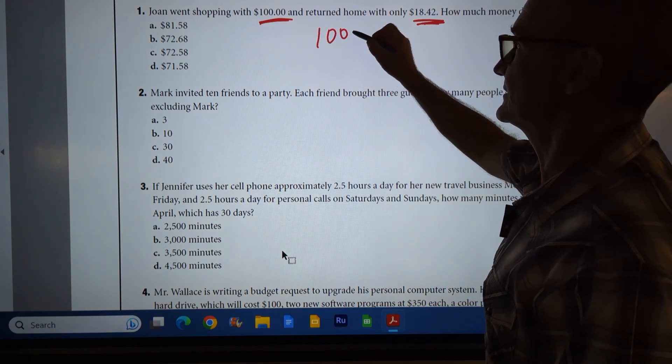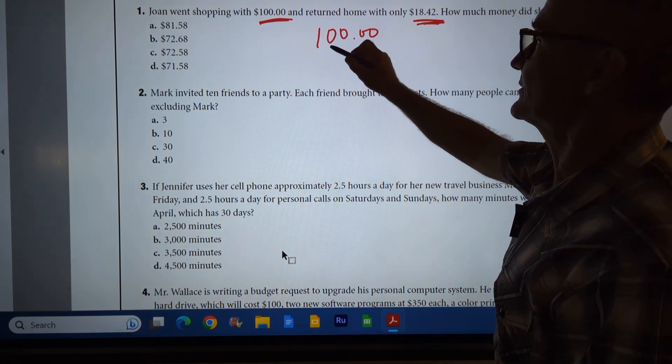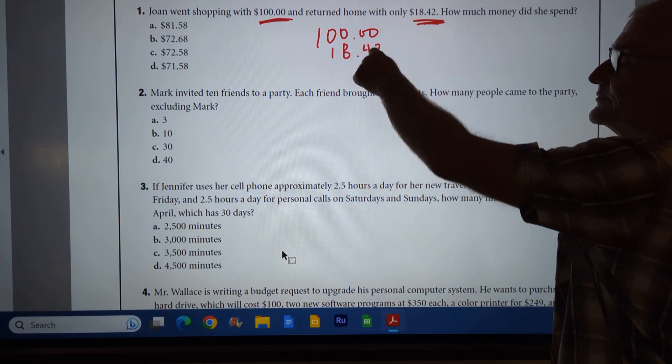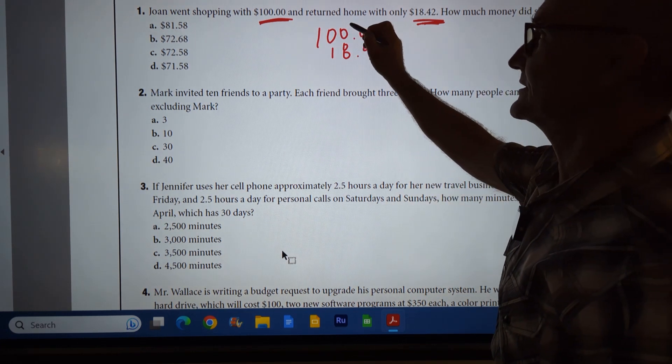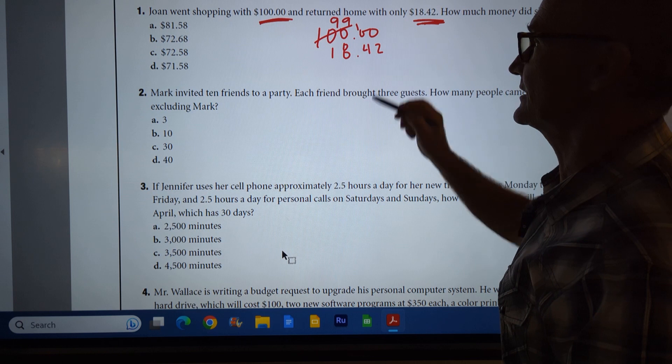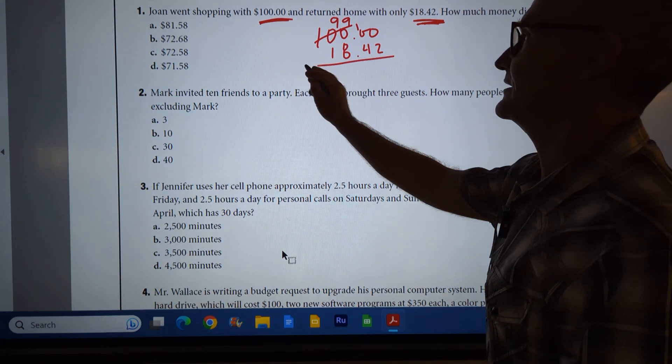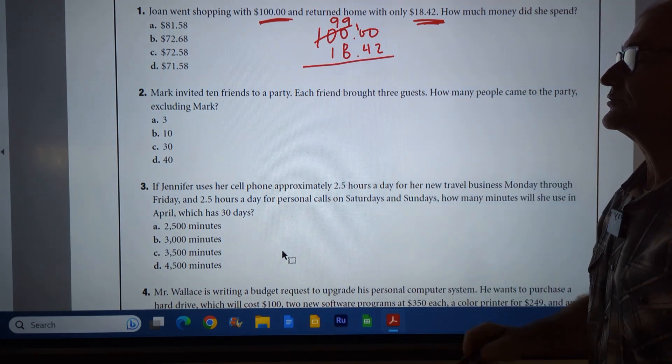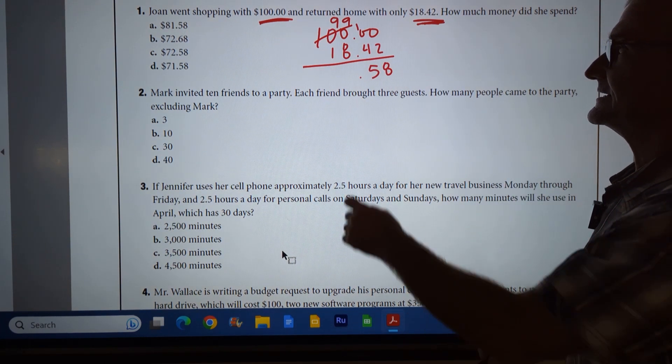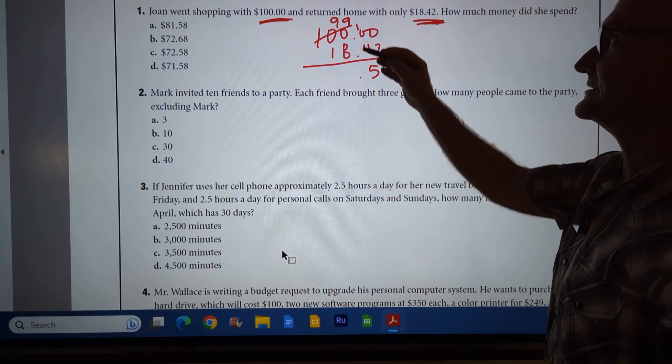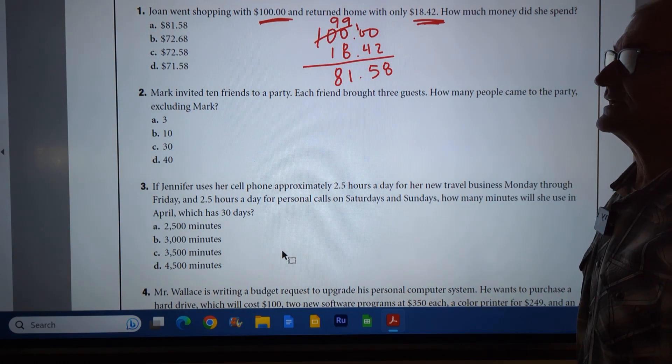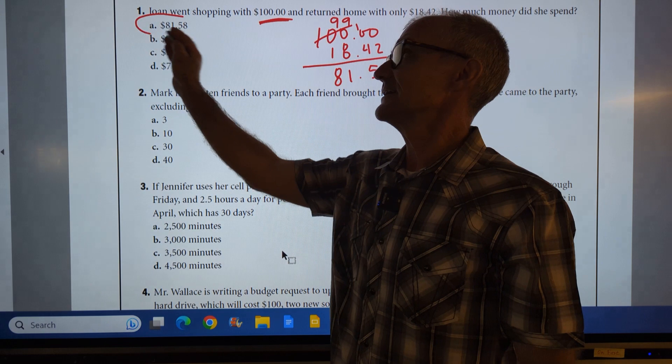So I have 100.00 minus 18.42. I can't do zero minus 42, so I've got to borrow one dollar from here. That's going to give me $99.100. 100 cents minus 42 is 58 cents. Then 99 minus 18 is 81.58. Correct answer, answer A.